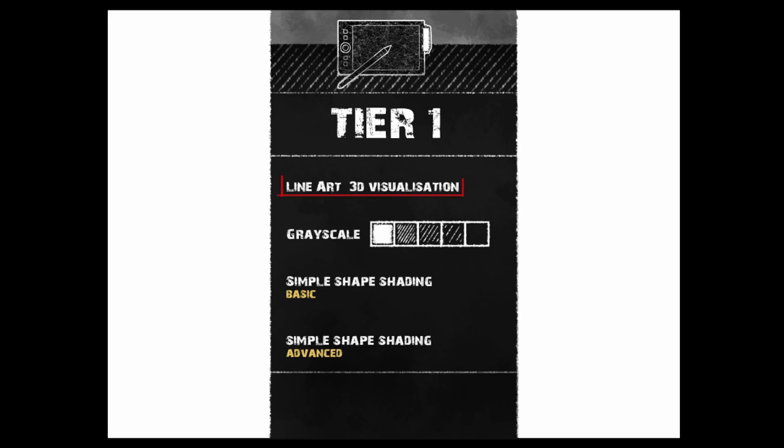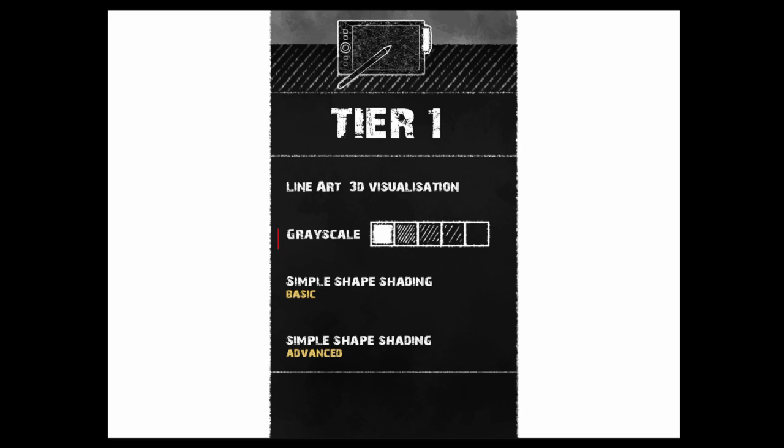After we learn how to visualize things in 3D space and know how to draw it out, we move on to the next step, which is grayscale. Grayscale is what you see right here. We're gonna talk about grayscale, which is gonna show us values. Values is something I've talked about before — it's basically the dark going towards white. Black, dark gray, just gray, light gray, very light gray, and white. So that is the grayscale, and in grayscale we have values.